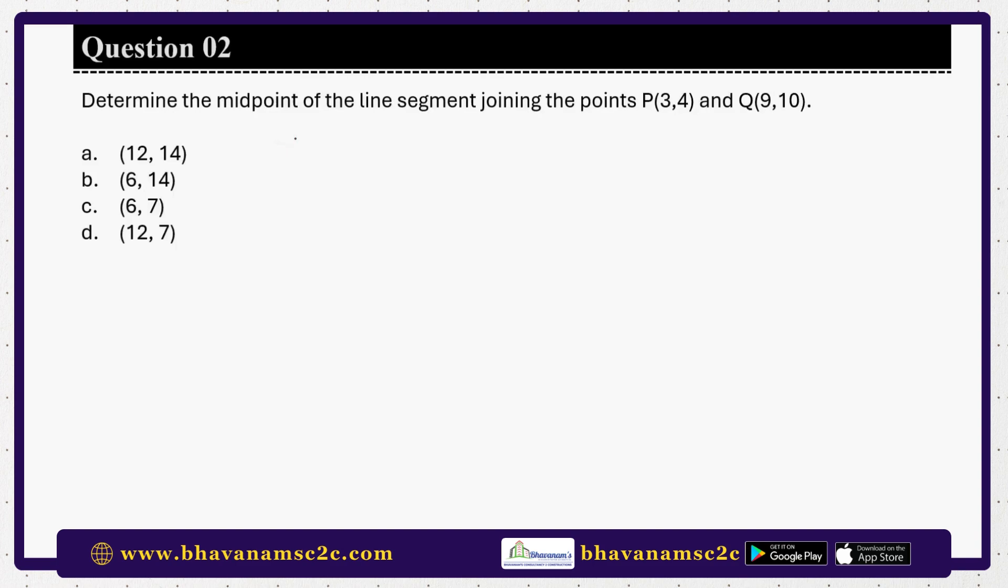In order to calculate the midpoint, what you have to do is x1 plus x2 by 2 comma y1 plus y2 by 2. So this will be 3 plus 9 by 2 comma 4 plus 10 by 2, which is 6 comma 7.